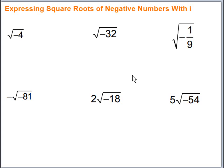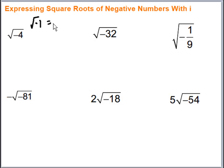In this video we're going to take a look at expressing square roots of negative numbers using i. i stands for imaginary numbers because any number when you multiply it by itself is always going to give us a positive. So we bring in i, which stands for imaginary, to deal with situations like that. It all hinges on this: the square root of negative 1 is equal to i. We're going to use that to simplify situations where we're trying to take the square root of a negative number.